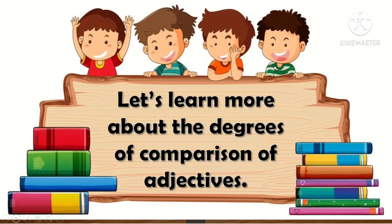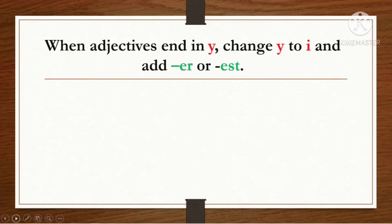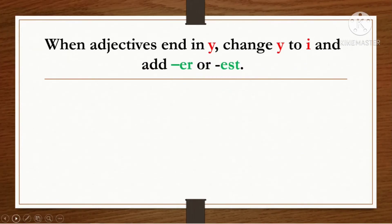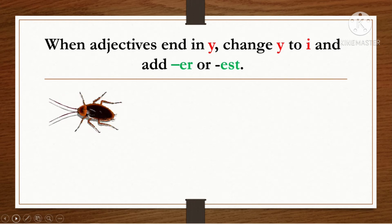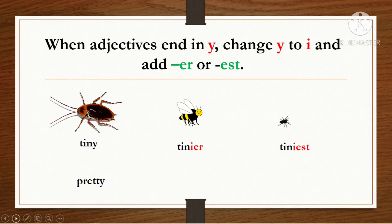Let's learn more about the degrees of comparison of adjectives. When adjectives end in Y, change Y to I and add -er or -est. For example: tiny, tinier, tiniest — tiny is positive degree, tinier is comparative, and tiniest is superlative. Another example: pretty, prettier, prettiest.